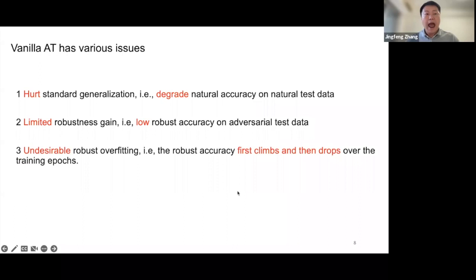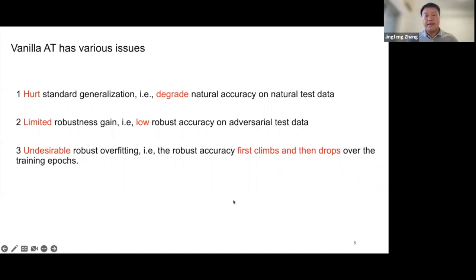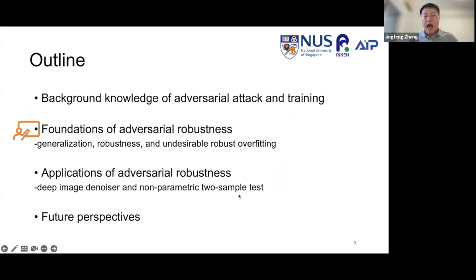However, adversarial training has various issues. For example, it hurts standard generalization — that is, it degrades natural accuracy on natural test data. It also has limited robustness gain, meaning very low robust accuracy on adversarial test data. It also suffers from undesirable robust overfitting: robust accuracy first climbs then drops over the training epochs. I'm going to cover three aspects on how to improve adversarial training: generalization, robustness, and undesirable robust overfitting.